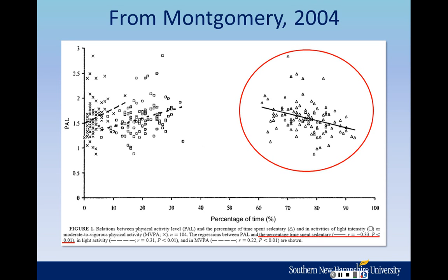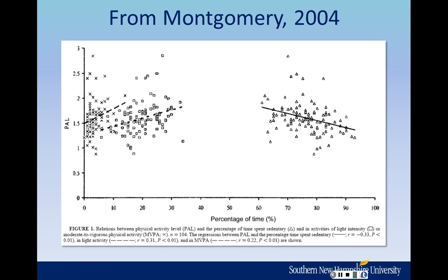The r is the correlation coefficient, which is .33 with a negative sign. That negative sign doesn't tell you anything about how strong the relationship is, but it tells you the direction. You can see that the way the line is angled — from upper left to lower right — that is an inverse relationship. Compared to the other two lines on this graph, those two are positive, and you'll see their correlations are positive numbers. The p-value is less than .01, and we know that p-values less than .05 are considered statistically significant.